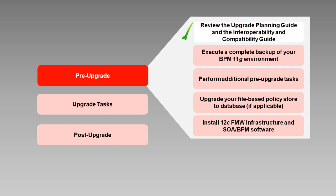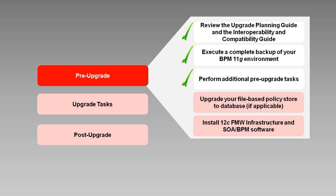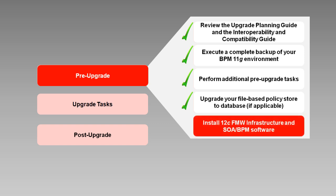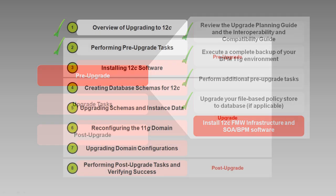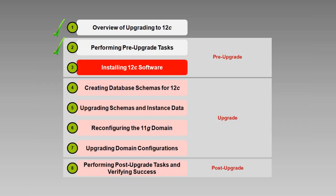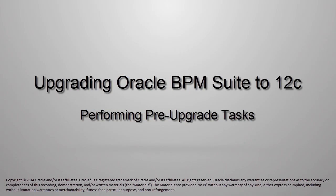So you've reviewed the documentation and ensured that your environment met the requirements. You've done a full backup and performed a few other tasks to prepare your environment for the upgrade. And if you previously had a file-based policy store, you've upgraded that to a database-based store and taken another backup. Now you're ready for the last of the pre-upgrade tasks: installing the 12C infrastructure and SOA BPM software. We devote an entire video to that subject. Starting with the installing 12C software video, you'll get to see some demos. I'm Rosie Piller. Thanks for watching and I'll see you in the next video.